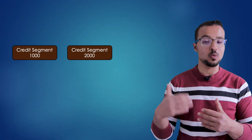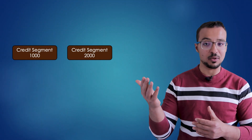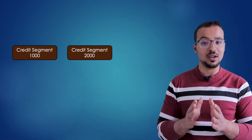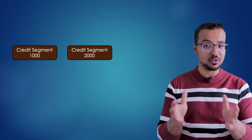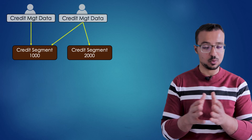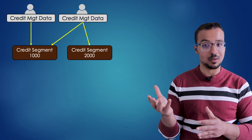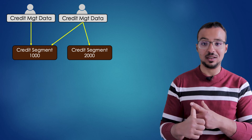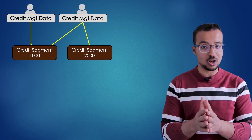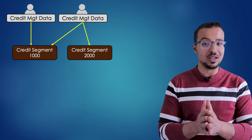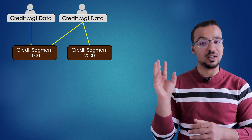The first step in the configuration of credit management in SAP S4HANA is to define one or multiple credit segments. Then we maintain the credit management details for every business partner or customer on the level of the credit segment. So the credit limit and the other fields needed to perform the credit check are maintained on the level of a credit segment.